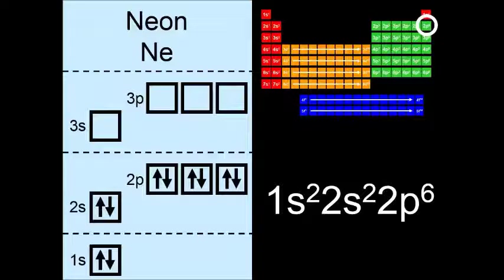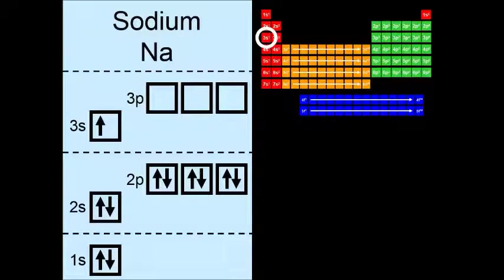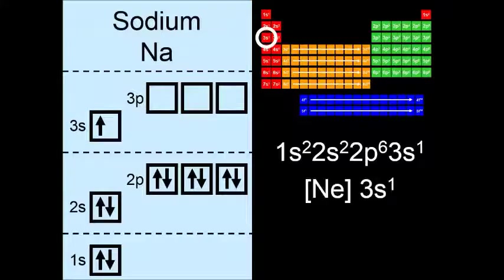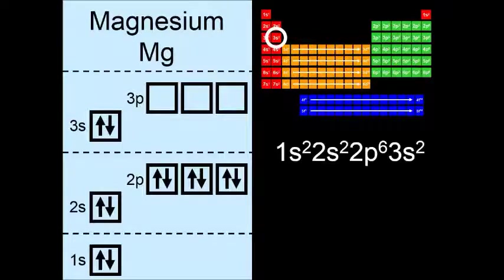So moving on to the third period of the periodic table, the pattern continues. We start with the s orbitals. This is sodium. And I'll show you the abbreviated form of the electron configuration. So neon 3s1. And then magnesium right next to it, neon 3s2.